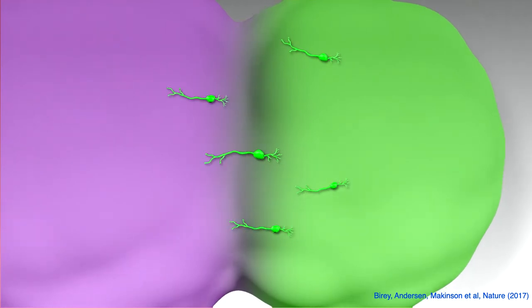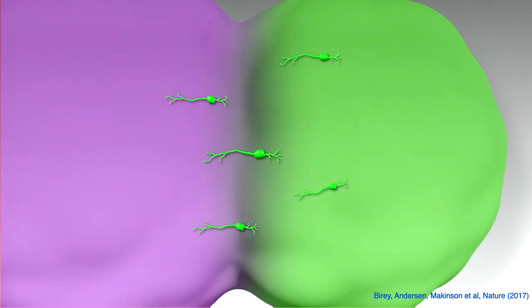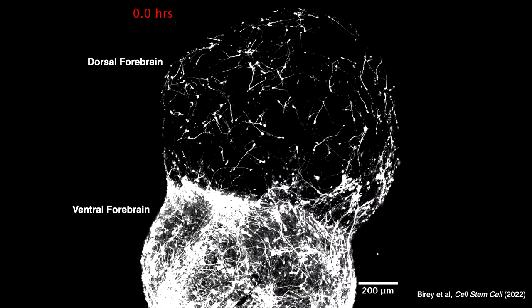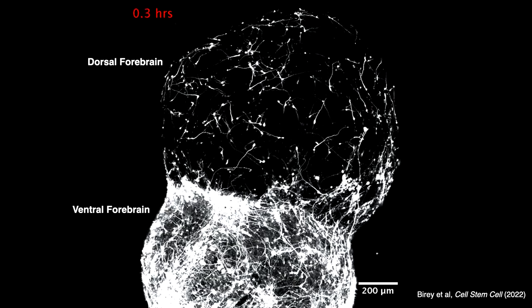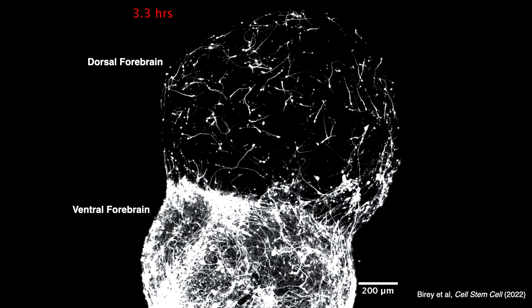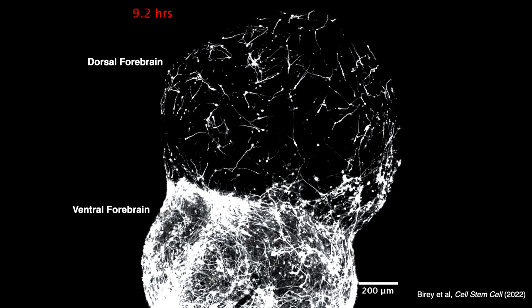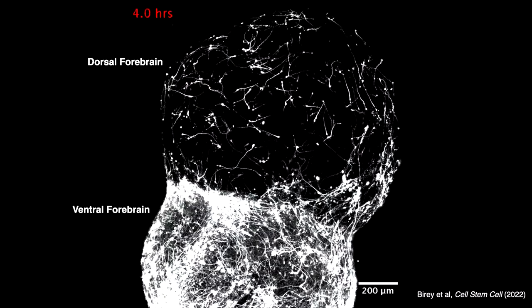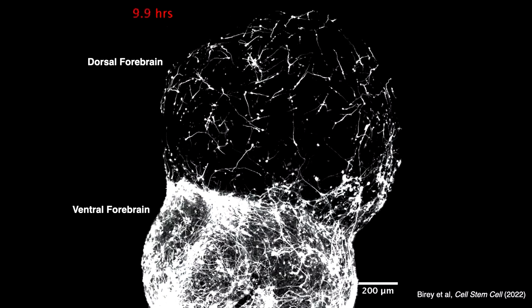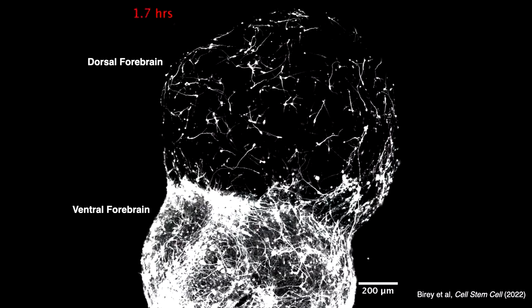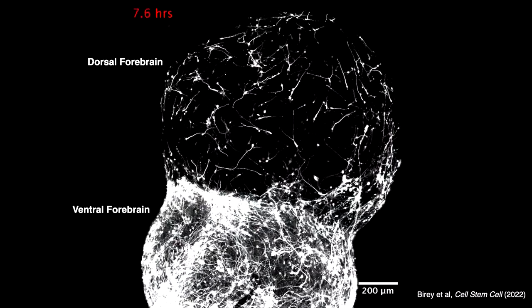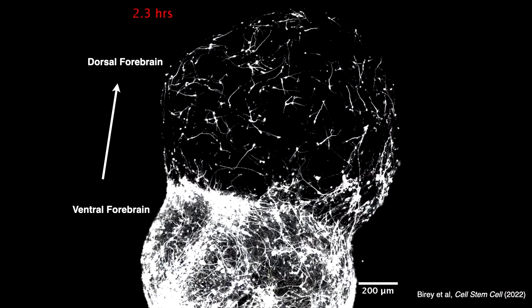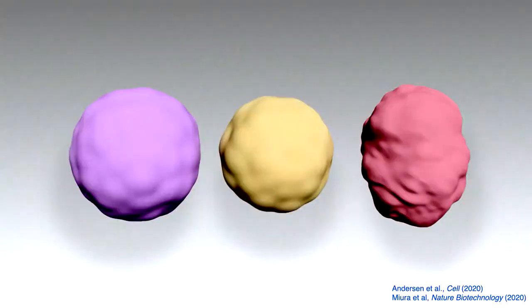The idea is to make a dorsal forebrain and a ventral forebrain — all interneurons are born in the ventral forebrain in humans — and when you put them together, interneurons slowly move using nucleokinetic jumps and reach the cerebral cortex. And to a large extent, this is exactly what you see. When you fuse the two parts, a large fraction of interneurons start to move toward the dorsal forebrain in this peculiar jumping behavior, and we've already used this to discover disease mechanisms.